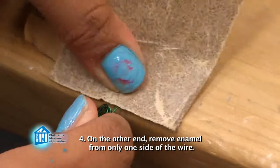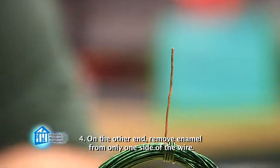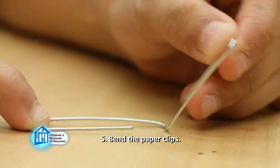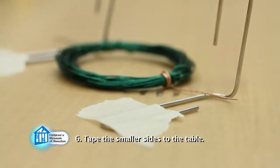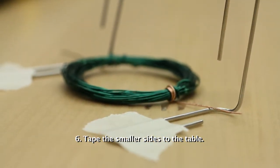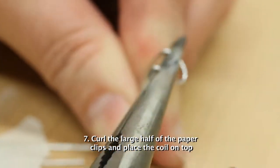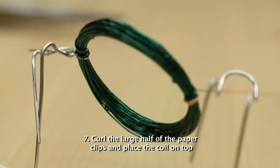On the other end, only remove the enamel from one side of the wire, leaving the other side with the enamel in place. Bend the two paper clips so the smaller half is perpendicular to the larger half. Tape the smaller halves to the table so that the coiled wire just barely fits between them. Use the needle nose pliers to curl the larger half of the paper clips so the coiled wires can rest on them.